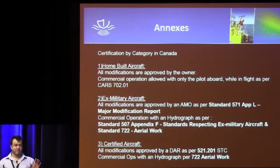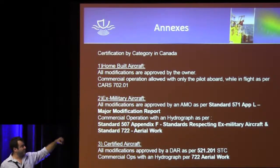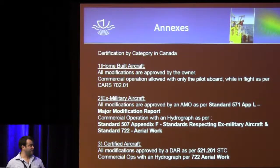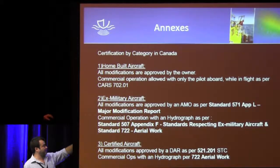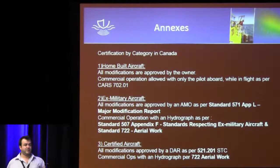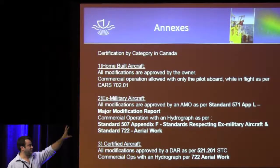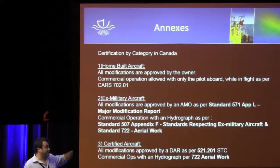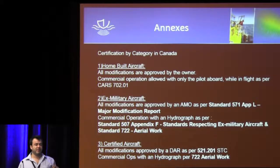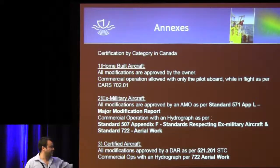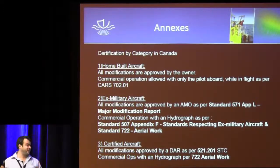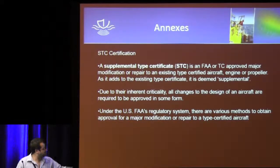There are three types of aircraft applicable to this kind of project. A homebuilt aircraft requires no Transport Canada certification — all modifications are approved by the owner — but during commercial operations the pilot must fly alone with no system operator. An ex-military aircraft allows modifications approved only by an aircraft maintenance organization, making it easy, and it can operate commercially with a system operator or hydrographer aboard. A certified aircraft requires all modifications to be approved by a design approval representative, which is very expensive, but commercial ops with a hydrographer and system operator are approved.